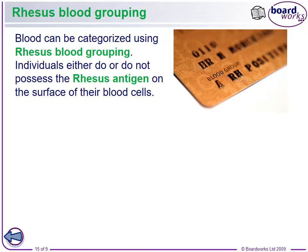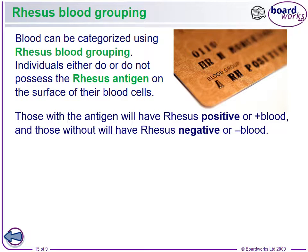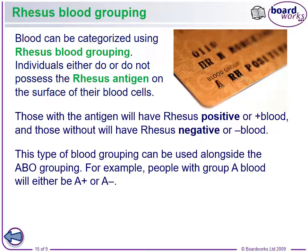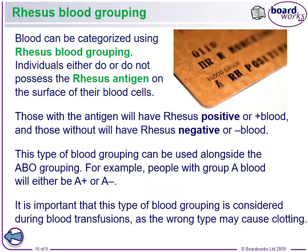Blood can also be categorized using rhesus blood grouping, discovered using rhesus monkeys. It's also called RH factor, and that's the positive and negative portion of your blood type. Individuals either do or do not possess the rhesus antigen on the surface of their blood cells — those with it have rhesus positive blood, those without have rhesus negative blood. This grouping is used alongside the ABO system, so with group A blood you can be A positive or A negative. This is important during transfusions because mismatched positive/negative blood will cause clotting.